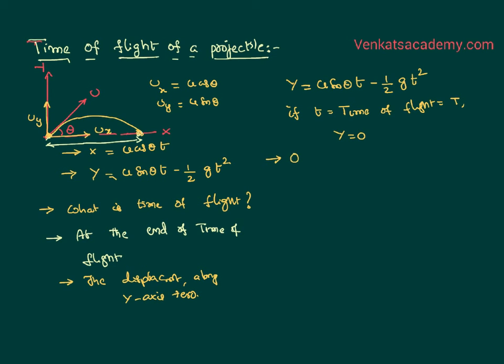Put that in the equation then, zero equal to u sin theta into T. Because I am calling the time of flight as T itself. So I can further simplify. u sin theta into T is nothing but equal to half gT square. I can further cancel this t and t. I can get 2u sin theta equal to gT. Therefore, I can get an equation, time of flight is nothing but equal to 2u sin theta by g.